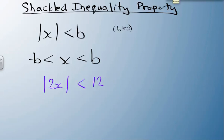For example, if the absolute value of 2x is less than 12, using the shackled inequality property, I can take a minus 12 on that side, and I'm going to put a less than 2x, which is also less than positive 12. Divide all three parts by 2, and end up with minus 6 is less than x, which is less than 6, and there's my final answer.